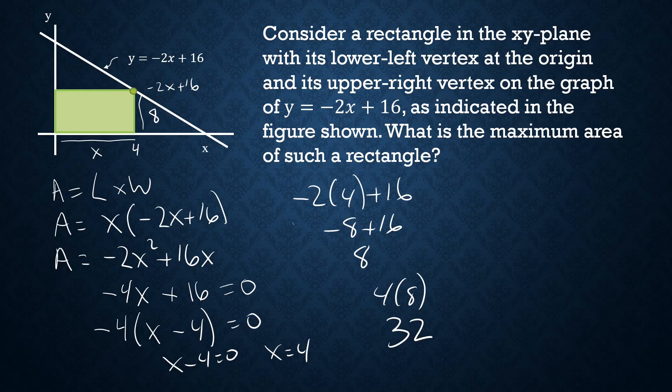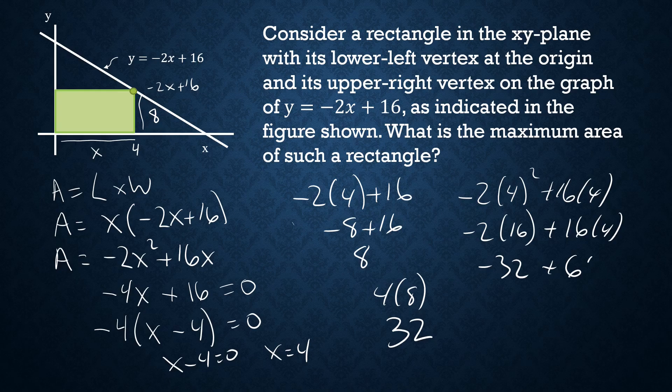We could just plug it into the area formula. We could have done negative 2 times 4 squared plus 16 times 4. That's negative 2 times 16 plus 16 times 4. That's negative 32 plus 64, or just 32.